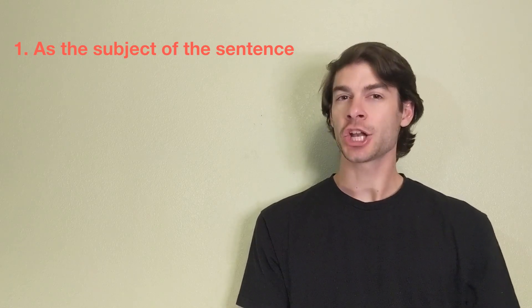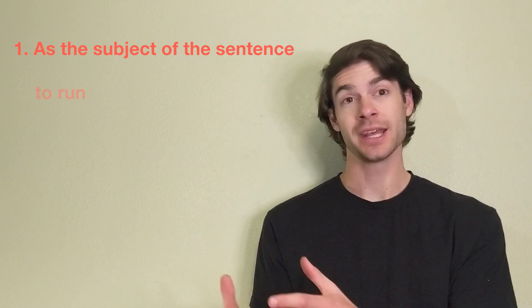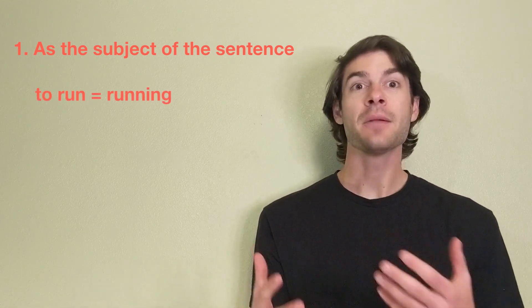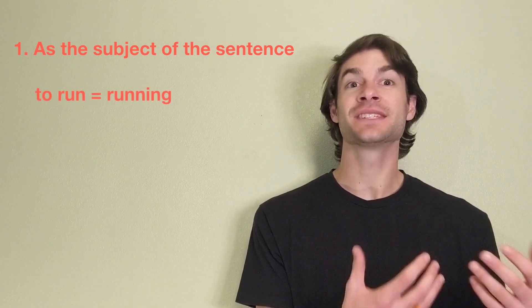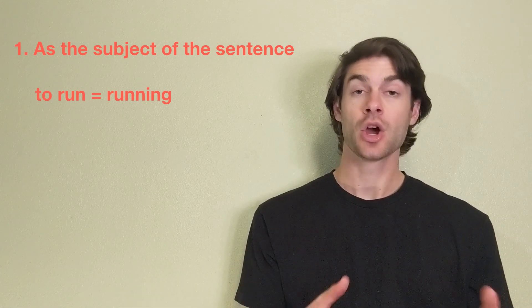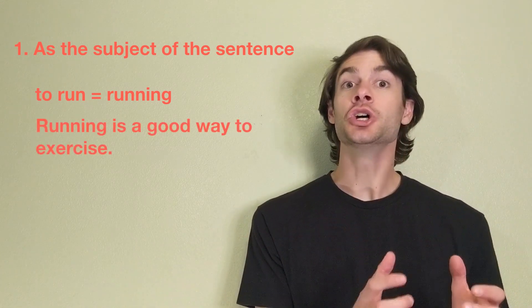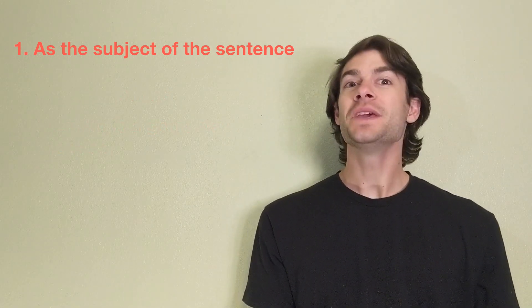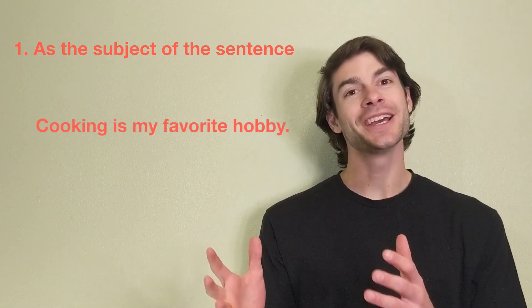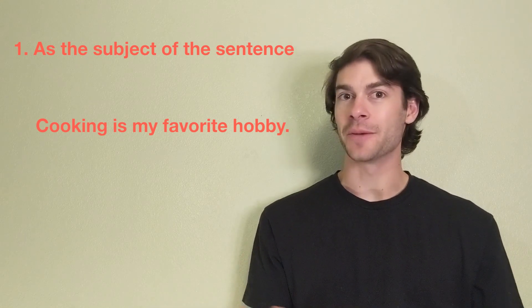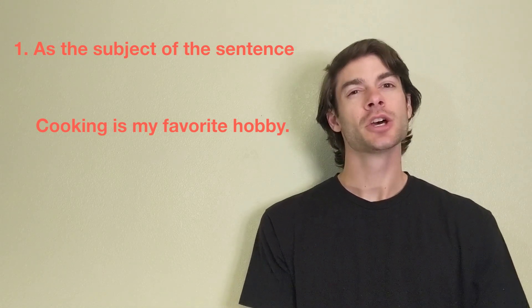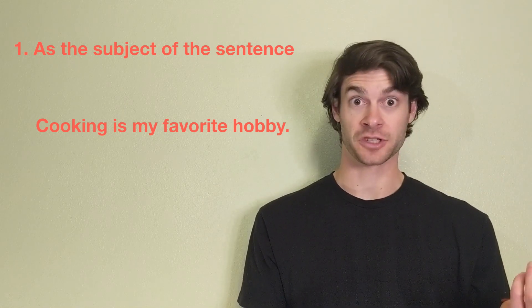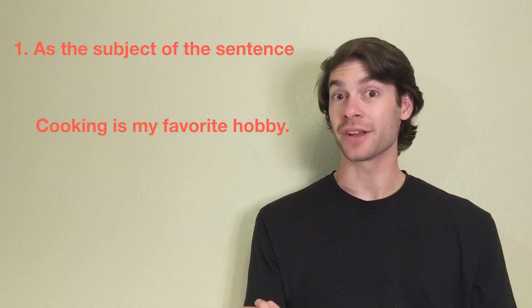We can conjugate the verb to run into the gerund form running and place it at the beginning of the sentence. To say, running is a good way to exercise. Another example would be the sentence, cooking is my favorite hobby. In this sentence, cooking is both our subject, because it's first and a gerund.